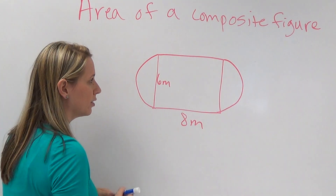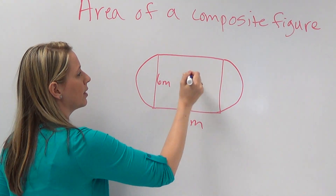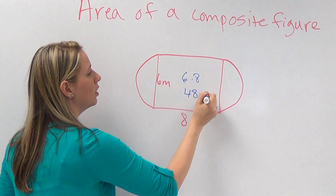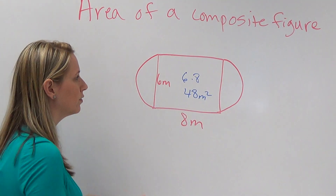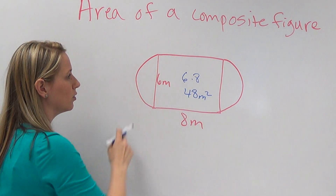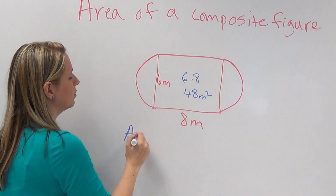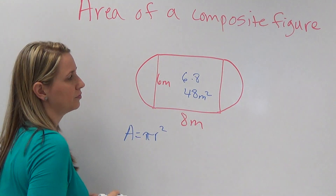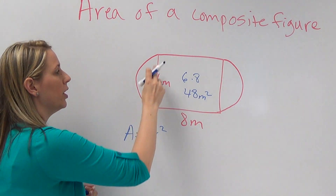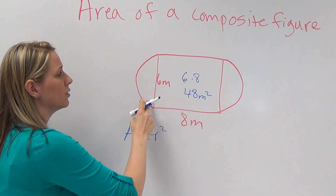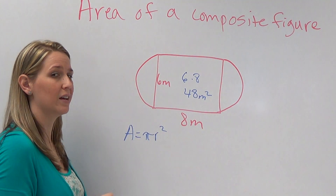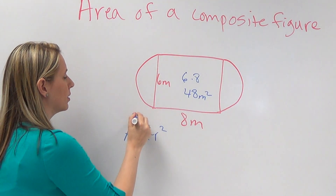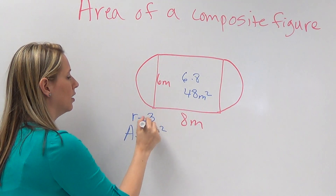The area of the rectangle would be six times eight, which would be 48 meters squared. Now for this circle, the area of a circle is pi times the radius squared. I don't have the radius, but this side of the rectangle is actually the diameter of the circle. So if you divide that by two, it gives you the radius, which is three.